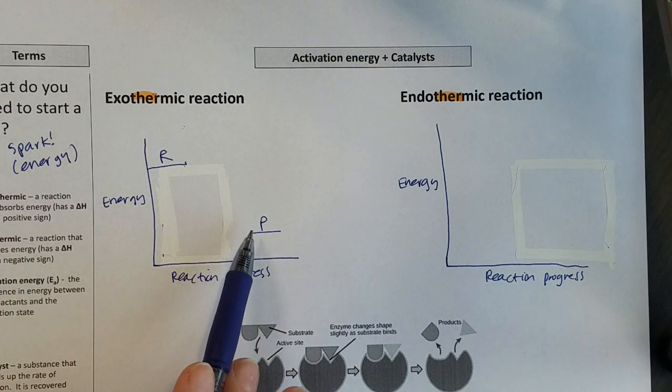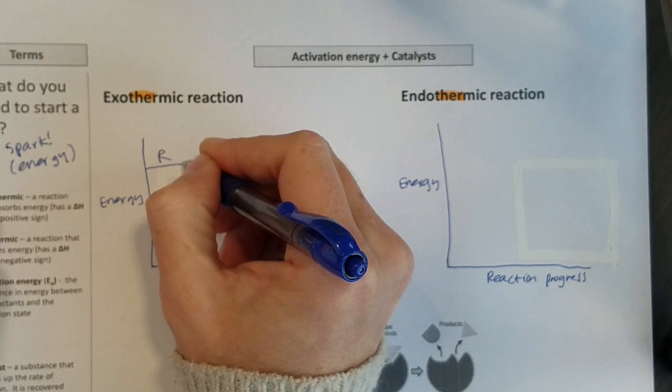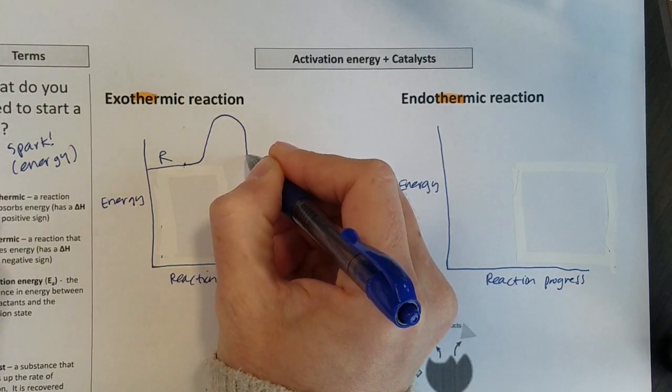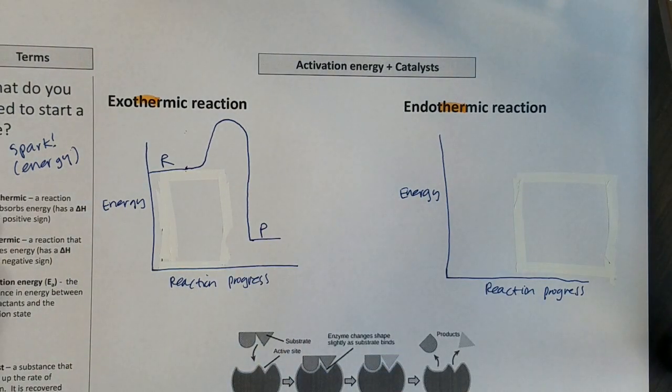and then I can get energy out. That's going to change our picture a little bit. So we're going to add energy in. There's my spark, and then I can get energy out of my exothermic reaction.